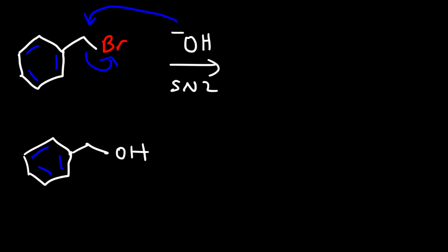And then if we want to, we can oxidize the primary alcohol into an aldehyde using PCC. And so now we have benzaldehyde. Now you can also produce benzaldehyde using the Gatterman-Koch reaction.